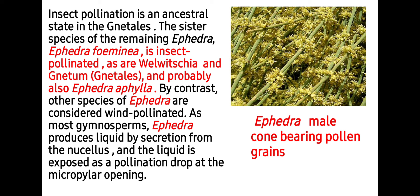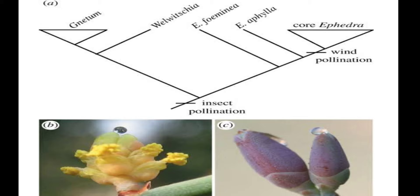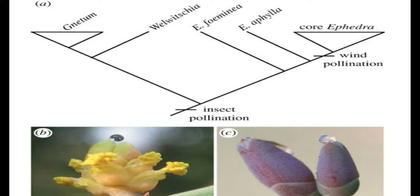The liquid is exposed as the pollination drop at the micropyle opening. In this image you can see a mature male cone bearing pollen grains in Ephedra. In this slide you can see the pollination drop present in the ovule of the female cone. Both insect and wind pollination take place in the Gnetales — Gnetum prefers insect pollination, and likewise in Ephedra both wind and insect pollination takes place.